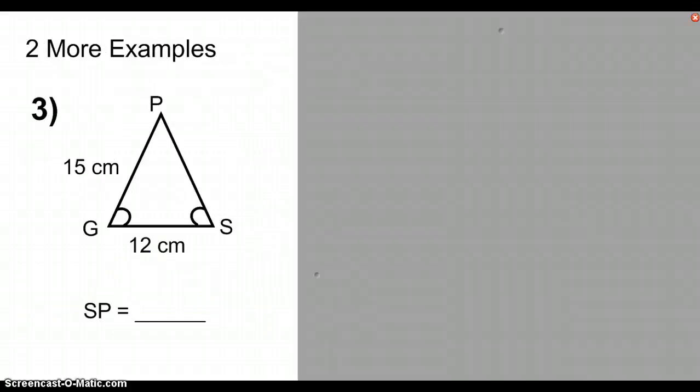Now, applying the converse of the isosceles triangle theorem. So in example 3, we have triangle GPS, and we see that angle G and angle S are congruent. So the fact that angle G and S are congruent tells us that the sides across from them, so segment GP and segment PS, those sides are going to be congruent. So segment GP is congruent to segment PS by the converse of the isosceles triangle theorem.